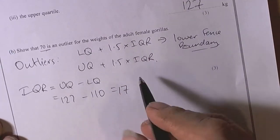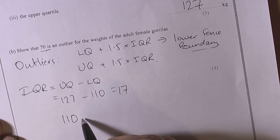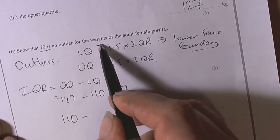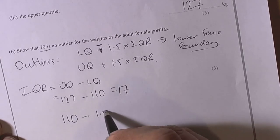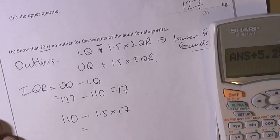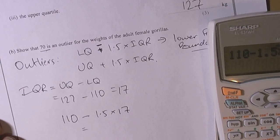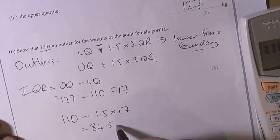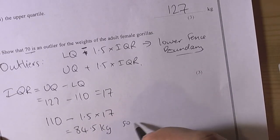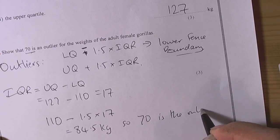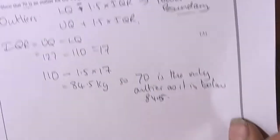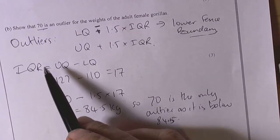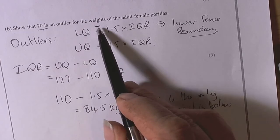So the lower fence then will be found by this formula here, so we need the lower quartile value, take away, why did I put plus, silly boy, so minus there, so it should be the lower quartile minus 1.5 times the interquartile range, so 110 minus 1.5 times 17, so we do that in our calculator, 110 minus 1.5 times 17 equals 84.5 kilograms, that's the units we're using, so 70 is the only outlier as it is below 84.5, so we've verified that as the outlier value, using these formulas for outliers, using the correct symbol here of course, lower quartile take away 1.5 times the interquartile range.